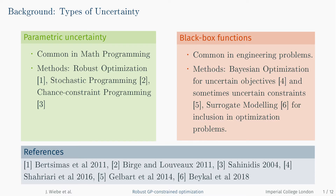In mathematical programming, we have lots of methods for optimization under uncertainty when it comes to parametric uncertainty. The best-known techniques are robust optimization, stochastic programming, and chance-constrained programming. However, a lot of engineering problems contain functional dependencies which are not explicitly known and may be expensive to evaluate through experiments or simulation.